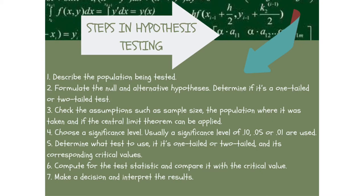Fifth, determine what test to use — whether it is one-tailed or two-tailed — and its corresponding critical values. Sixth, compute for the test statistic and compare it with the critical value. And seventh, make a decision and interpret the result.